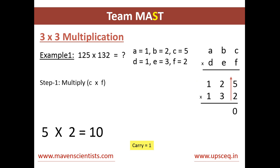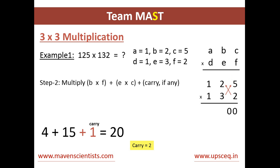Let's see how to multiply 125 into 132. First, following step 1, we multiply 5 into 2, which gives us 10. We have a carry of 1 and we write the number 0. Next, we multiply 2 into 2 plus 3 into 5, which gives us 4 plus 14 plus 1 carry, equals 20. We have a carry of 2 and we write 0 next to the first 0.